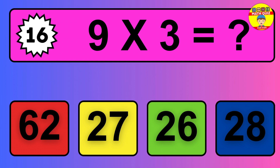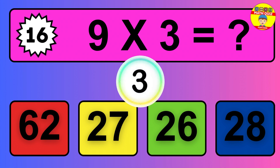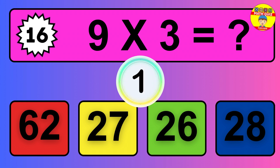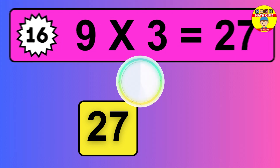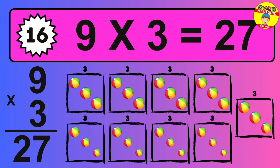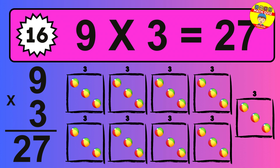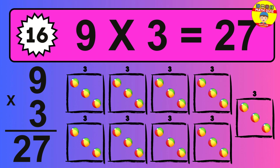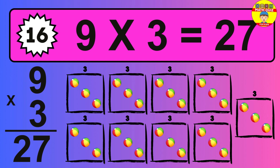Question 16. 9 times 3 equals what? So the answer is 9 times 3 is 27. To calculate, we have 9 groups with 3 balls each one. So how many balls do we have? 27 balls.